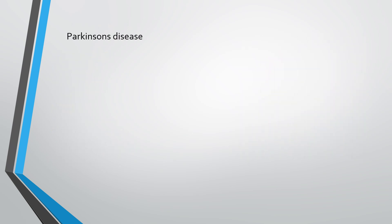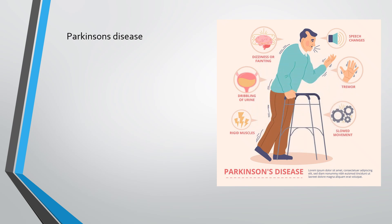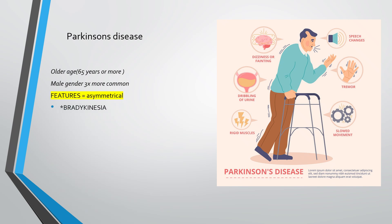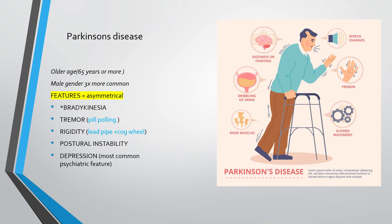Parkinson's disease is our main topic. Here you can see an old man with speech changes, tremor, slow movement, rigidity, dribbling, dizziness — this image shows a whole package of features of Parkinson's disease. It typically affects elderly age 65 years or more, and male gender is three times more common. Key features include asymmetrical tremor — specifically a pill-rolling tremor — bradykinesia, lead pipe and cogwheel rigidity, postural instability, and depression as the most common psychiatric feature.